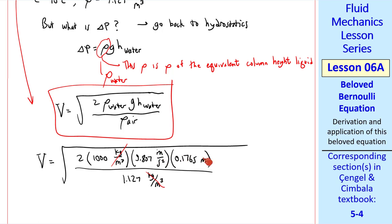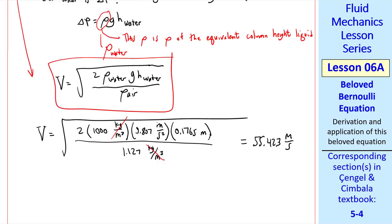And since this is meter squared per second squared square root, we don't need any unity conversion factors. I get 55.423 meters per second. To three significant digits, my final answer is 55.4 meters per second.